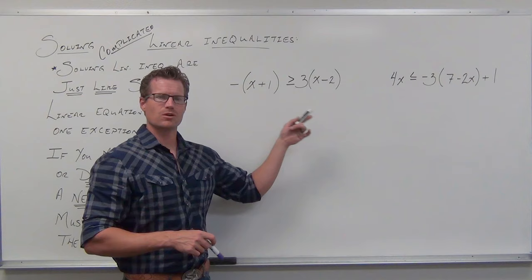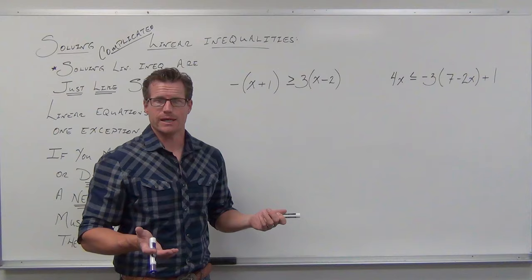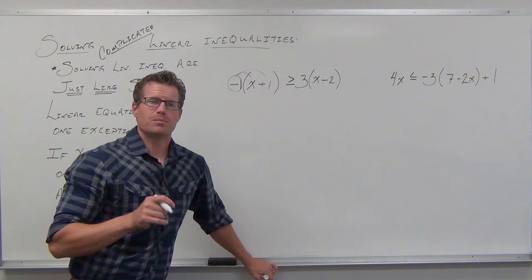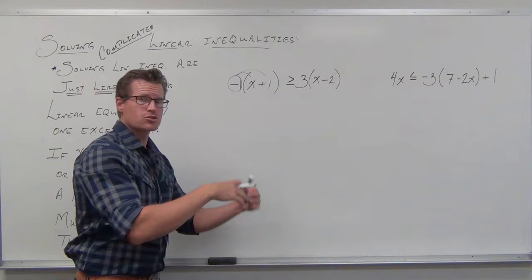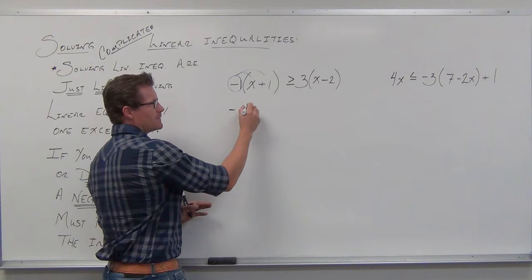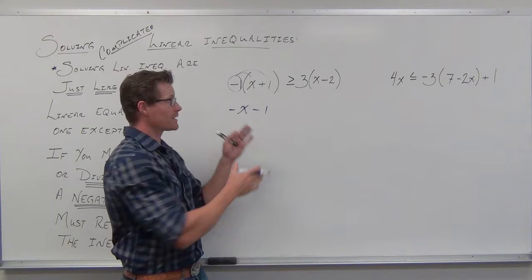So let's start here. If this were a linear equation, we would just start by simplifying, and that's exactly what we're going to do here. Keep in mind that when we simplify — yes, we're distributing, and distribution is multiplication — but please listen: this is not when you reverse the inequality. When you distribute, yes, it's multiplying, but it's not multiplying to both sides. That is the action that reverses the inequality. So when you distribute negative 1 and you get negative x minus 1, that is only affecting one side — you do not touch that inequality.